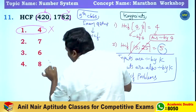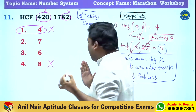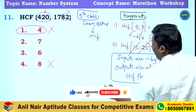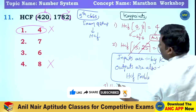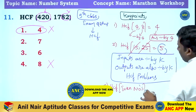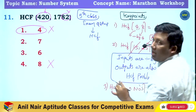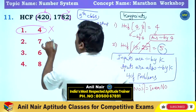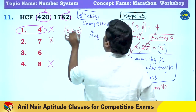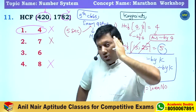If 4 cannot be the answer, how can 8 be the answer? Third key point: HCF of two even numbers is an even number. But how can 7 be the answer? This is a 5-second logic to solve. The next 4 to 5 questions are original exam questions, but you need a thorough understanding of HCF to solve them.